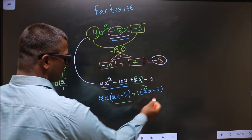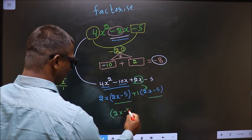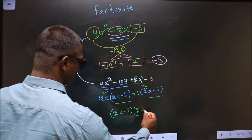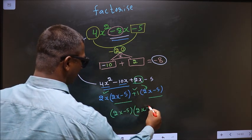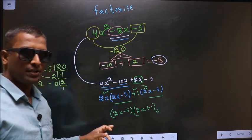Now you take 2x - 5 common. So here you have 2x and here you have +1. This is our answer.